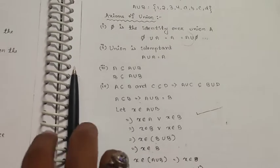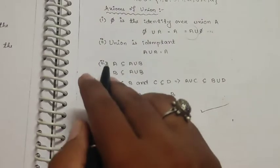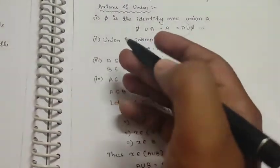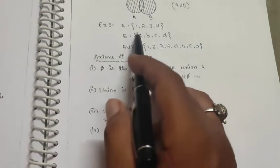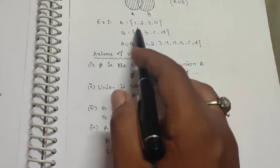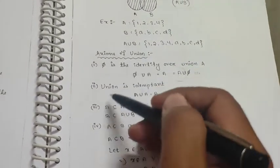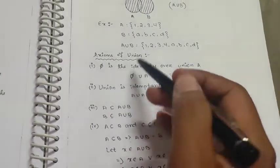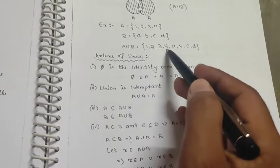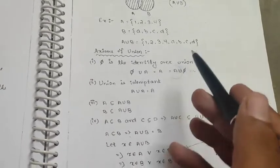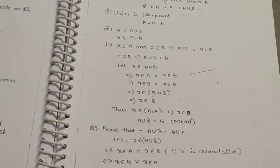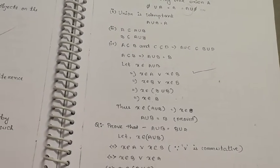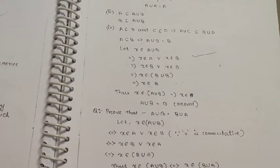Third property: A is a subset of A union B. Obviously, every element of A is in A union B. Similarly, B is a subset of A union B. Also, if A is a subset of B and C is a subset of D, then A union C is a subset of B union D.